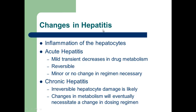So what happens when you have a patient with hepatitis? Obviously there's an inflammation — the '-itis' is an inflammation of the hepatocytes. In acute hepatitis, it's usually reversible and will probably be mild and transient as far as any decreases in drug metabolism, so you probably don't have to make any big changes in the dosing regimen of drugs that are cleared hepatically. However, with chronic hepatitis, this is often irreversible and changes in metabolism will eventually necessitate a change in the dosing regimen because of permanent loss of the enzyme activity needed to metabolize drug, resulting in a decrease in hepatic clearance.